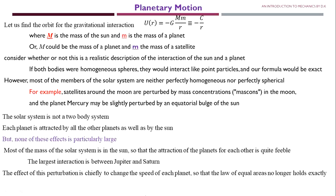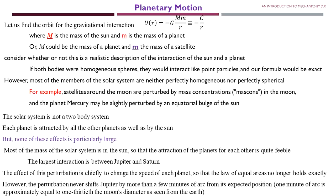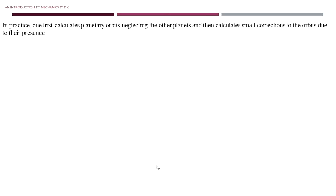We can avoid any attraction between the planets. The largest interaction is between Jupiter and the other planets. The effect of this perturbation is chiefly to change the speed of each planet so that the law of equal areas no longer holds exactly. However, the perturbation never shifts Jupiter by more than a few minutes of arc from its expected position. Although different planets attract each other, the magnitude of their forces is very small, so we can ignore their forces of attraction between each other. In a solar system, we will consider the main attraction to be the force of attraction between a planet and the Sun.